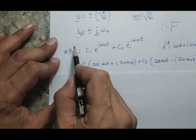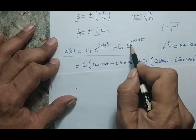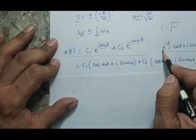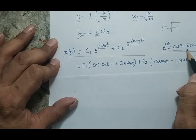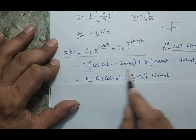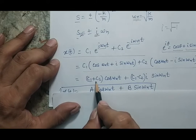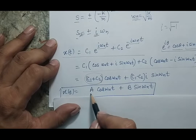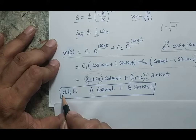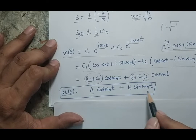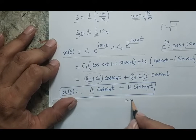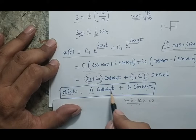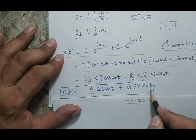Substituting s₁ = +iωₙ and s₂ = -iωₙ into the standard solution and applying Euler's formula e^(iθ) = cos θ + i sin θ, and then rearranging, the final expression becomes x = A cos(ωₙt) + B sin(ωₙt). This is the solution of the governing equation mẍ + kx = 0. By putting different time values into this solution, you can obtain the displacement x.